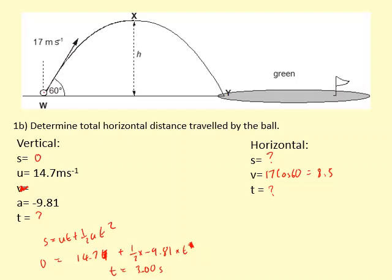So now this time we can put here, because it was in the air for the same amount of time, 3.00 seconds. Then using V equals S over T, S is equal to VT. 8.5 times 3 gives us 25 meters.